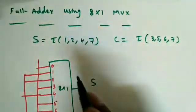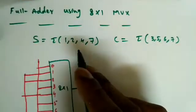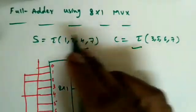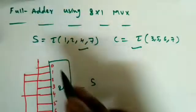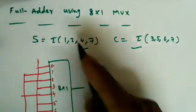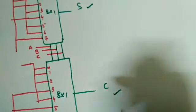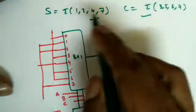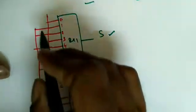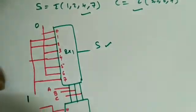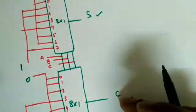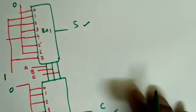Now let's implement a full adder using an 8×1 MUX. The full adder has a Sum output and a Carry output. For Sum, the minterms are 1, 2, 4, 7 — connect those positions to 1 and the remaining to 0. For Carry, the minterms are 3, 5, 6, 7 — connect those positions to 1 and the remaining to 0. Two 8×1 MUXes are needed: one for Sum and one for Carry.